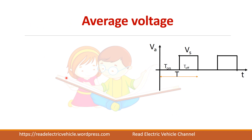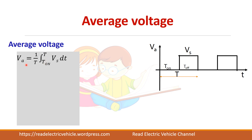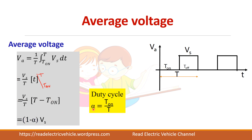Now let us derive the average voltage. The average voltage is given by (1/T) times the integral from Ton to T, because from Ton to the total time period T the output voltage is Vs — that is, during the off period you get the voltage. Simplifying and applying the limits, you get (T − Ton)/T. Since Ton/T is the duty cycle α, you get (1 − α)·Vs for the regenerative chopper, compared to α·Vs for the first quadrant chopper.